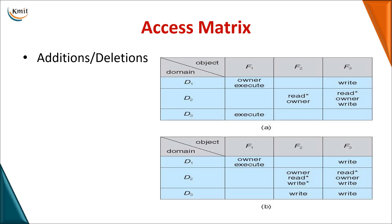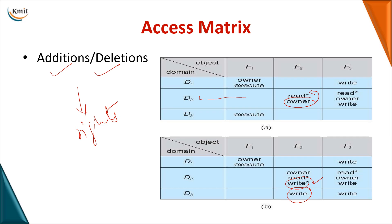On the same access matrix, if a particular domain (a user or process) is given permission as an owner, then as an owner you can perform the operations of addition and deletion pertaining to your rights. Since D2 has a read copy-right operation as well as being an owner, D2 can add its own rights. As an owner you have all the facilities to either add rights in the same column or delete rights in the same column.